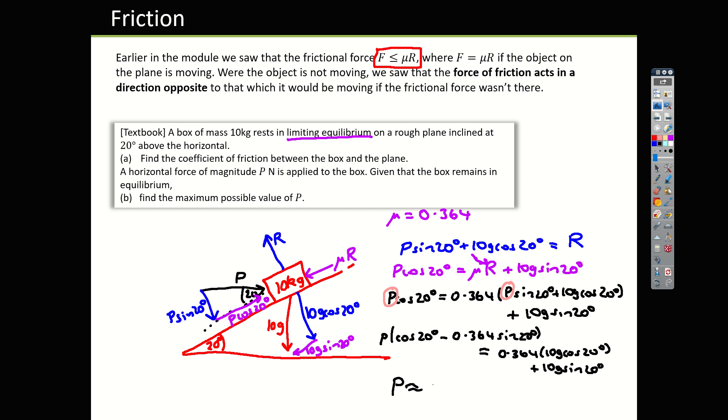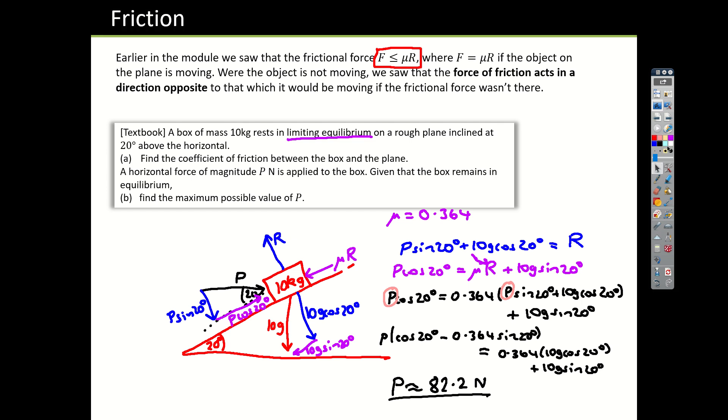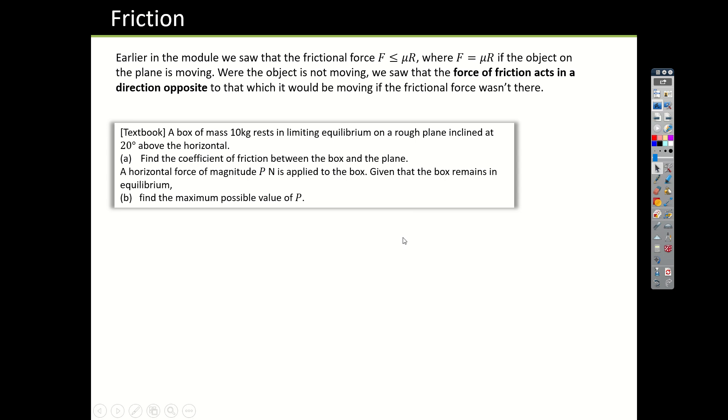And that's going to equal everything left on this side, which is 0.364 times the 10g cos 20, and then plus this extra 10g sin 20. Then dividing this bracket underneath tells you the maximum possible value of P, which gives you about 82.2. You can let me know if you get anything different to that, because I might have made a typing error, but that's the method at least sorted. 82.2 newtons. So that's one equilibrium problem sorted.